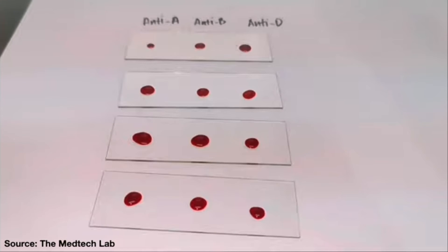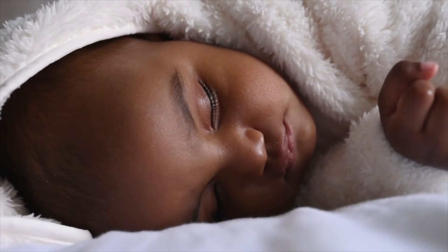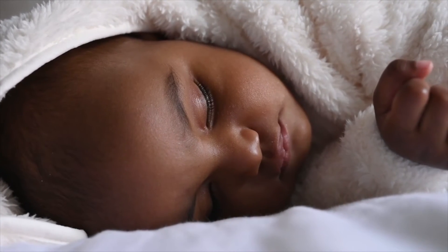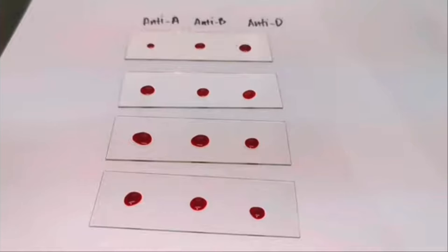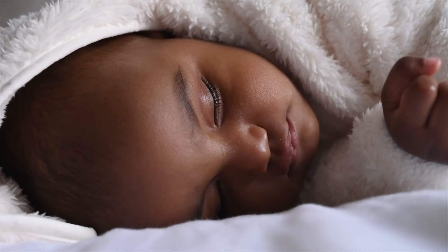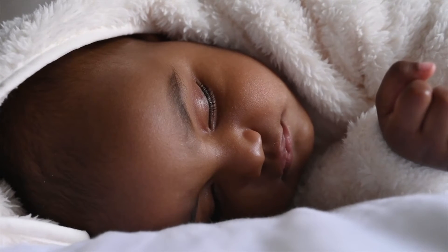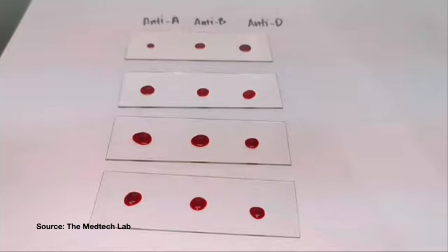But then if you face it again, your body says: we've seen this before, just like an infection — it doesn't belong to us — and then it will attack it. So unlike the ABO system, where your body already has antibodies by the time you're about one year old, the RH system is more of a responsive system. So how do you check for compatibility?